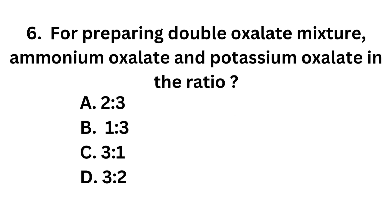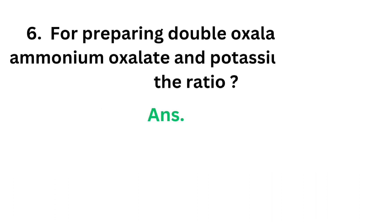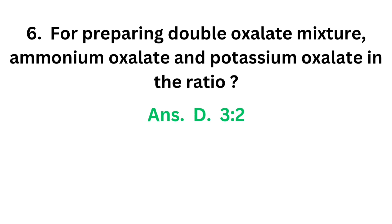Question number 6. For preparing double oxalate mixture, ammonium oxalate and potassium oxalate are taken in the ratio — Option A: 2:3. Option B: 1:3. Option C: 3:1. Option D: 3:2. The correct answer is option D, 3:2. Ammonium oxalate and potassium oxalate in the ratio 3:2 is taken to prepare double oxalate mixture.